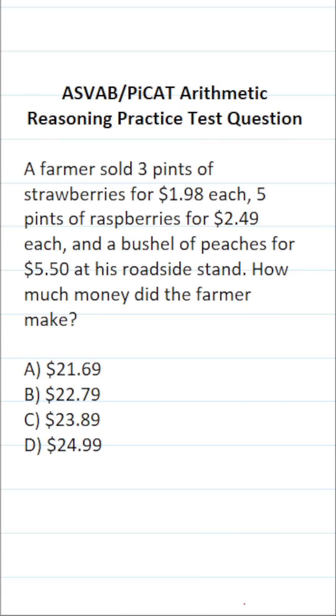This arithmetic reasoning practice test question for the ASVAB and PiCAT says a farmer sold three pints of strawberries for $1.98 each, five pints of raspberries for $2.49 each, and a bushel of peaches for $5.50 at his roadside stand. How much money did the farmer make?